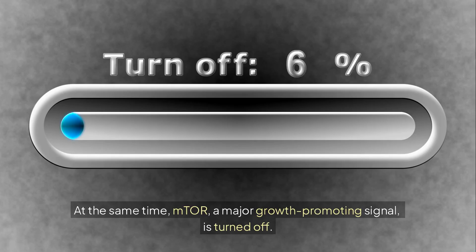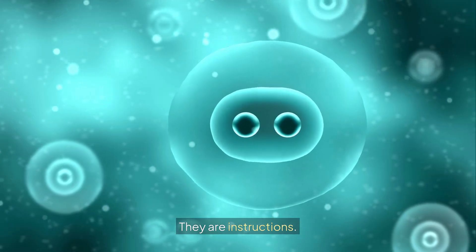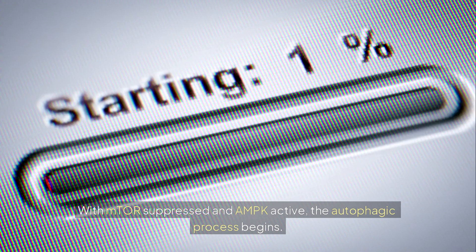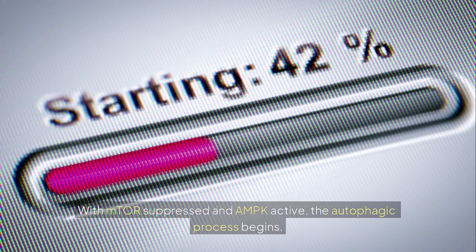At the same time, mTOR, a major growth promoting signal, is turned off. These shifts are not passive reactions. They are instructions. With mTOR suppressed and AMPK active, the autophagic process begins.